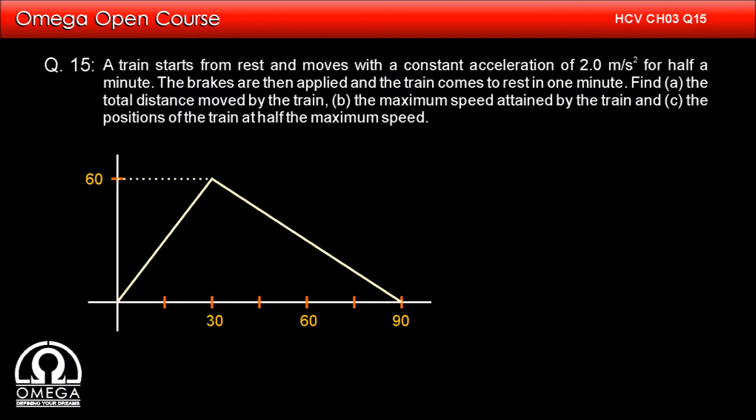As is evident from the graph, the maximum velocity of the train is 60 meters per second, which is answer to part B of the question. Finally, let us draw a horizontal line at 30 meter per second, that is half of the maximum velocity.